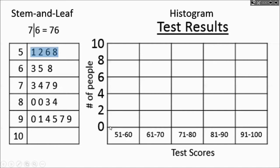It's 51, 52, 56, 58. That's four pieces of data that are in this range. 61 to 70. That's these three. 63, 65, 68.